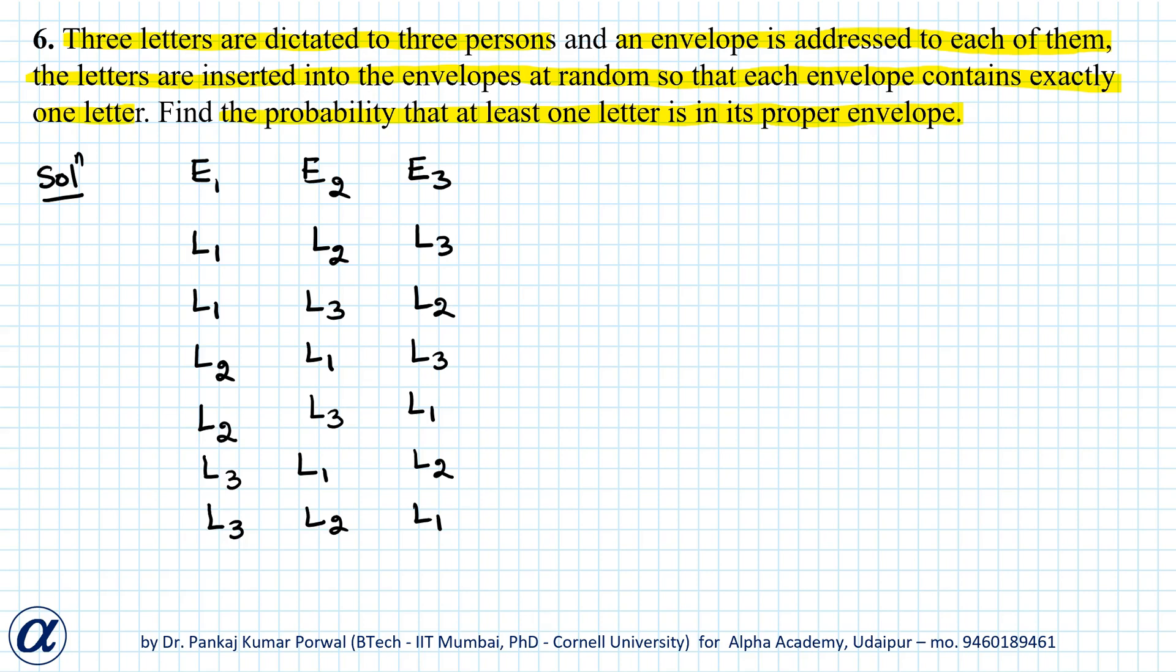Now in each case we have different numbers of letters in proper or improper envelopes. So let's write the number of proper letters and number of improper letters. In the first case, all three letters are in their proper envelopes, so I have three proper letters and zero improper letters.